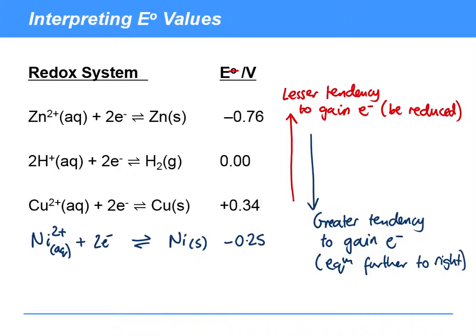Okay, so what you should have seen is that nickel 2+ has a lesser tendency to gain electrons than H+, and so its value is negative. But that tendency to gain electrons is stronger than zinc 2+. So it should appear right about here in the rankings.